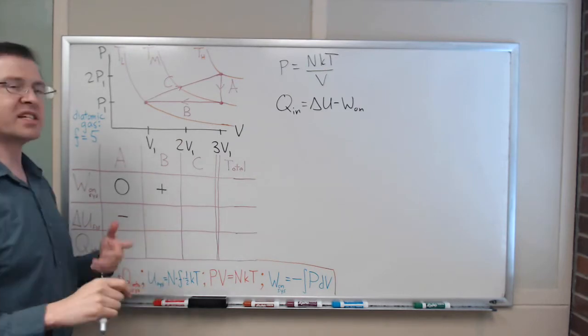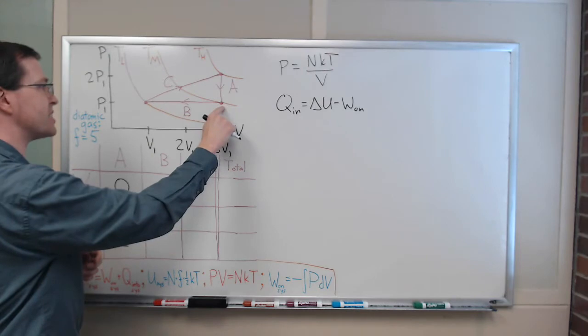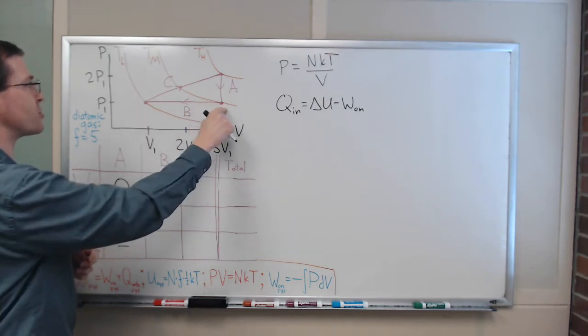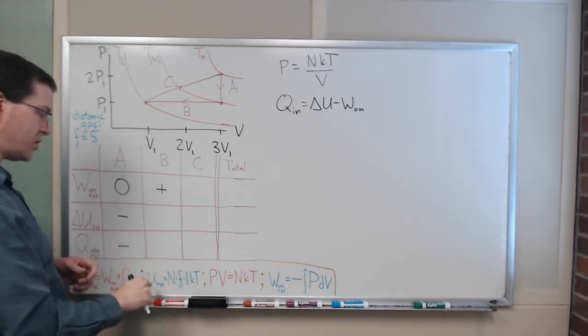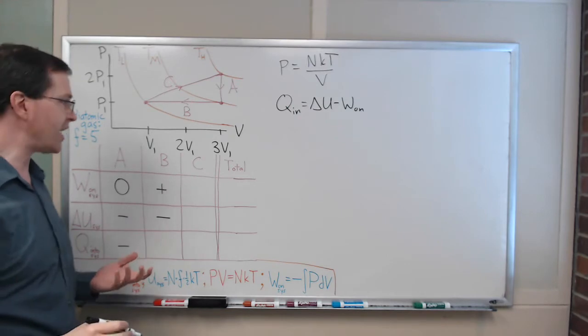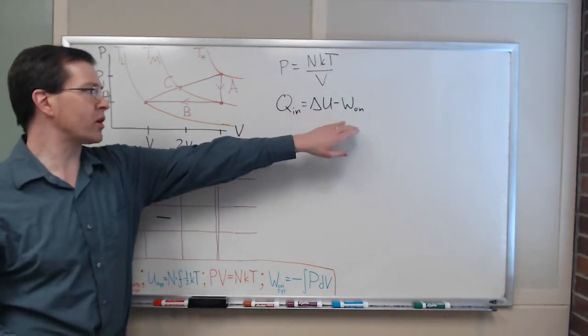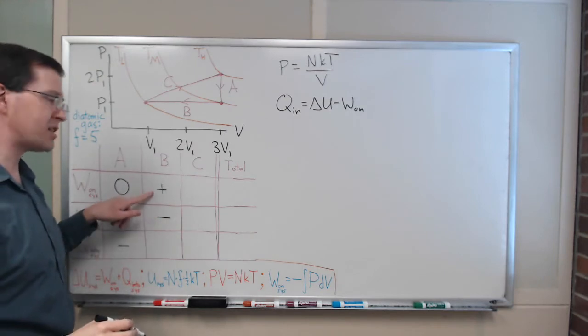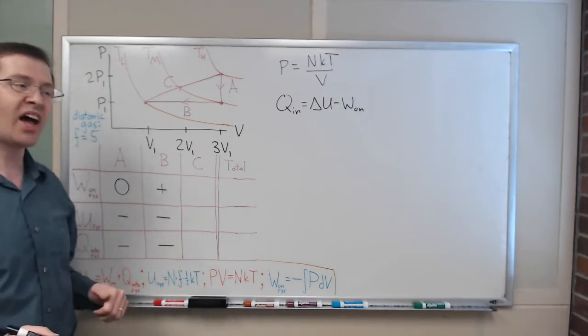Delta U. The same kind of reasoning from temperature applies here as well. We're going from this state to this state. The temperature is going down from middle to low. And so, if the temperature goes down, the U goes down. So, this is negative. Putting those together to find the heat, delta U minus work is a negative minus a positive will give me something that's even more negative. Got that.